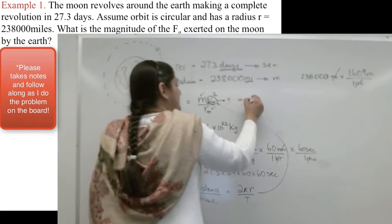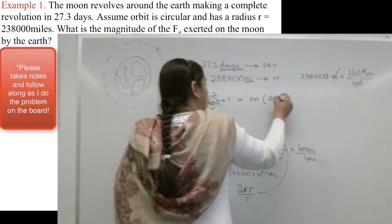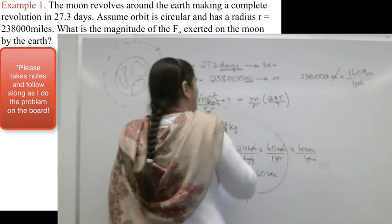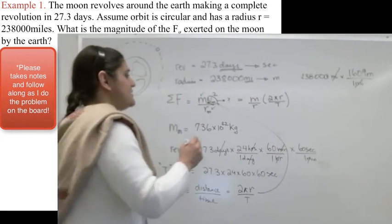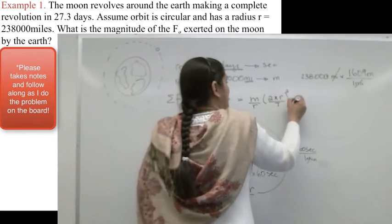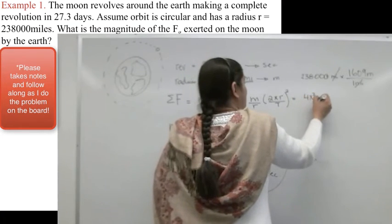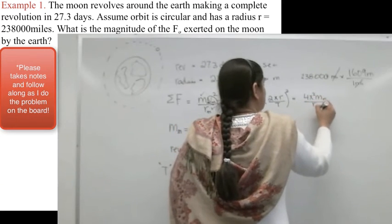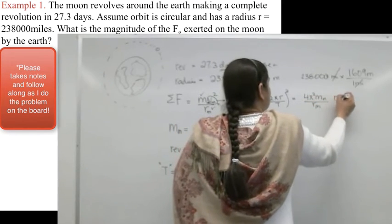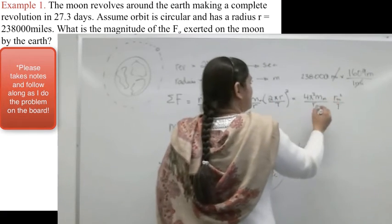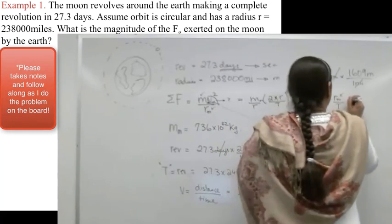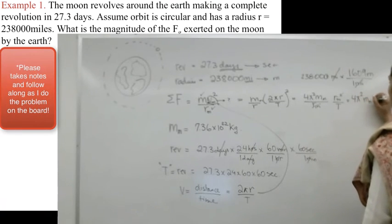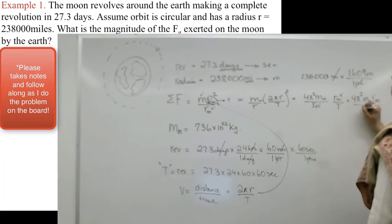What do I get? I'm going to get m times 2πr divided by T divided by r again, and a square. So I can get 4π² m of the moon, mass of the moon, divided by radius of the moon, r of the moon squared divided by T. One r goes away, and I can get 4π² mass of the moon times radius of the moon divided by T.